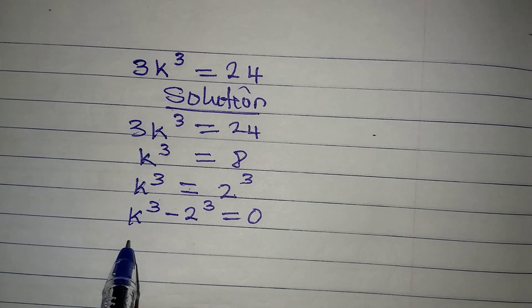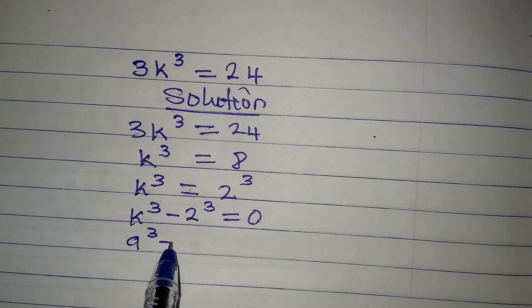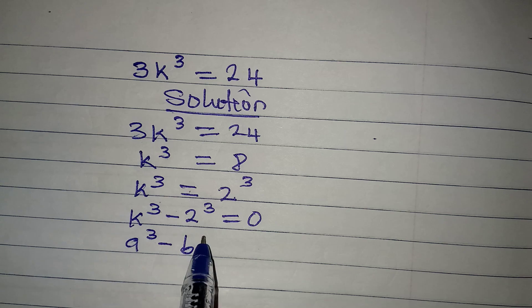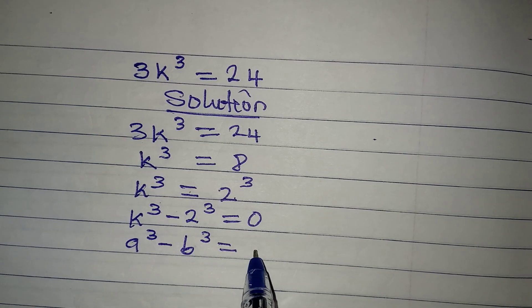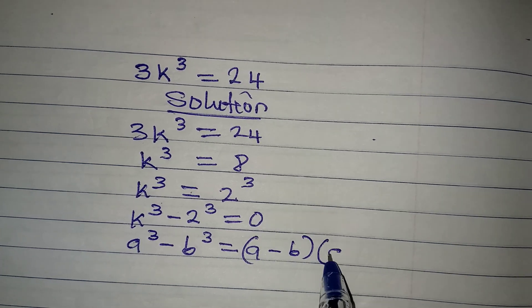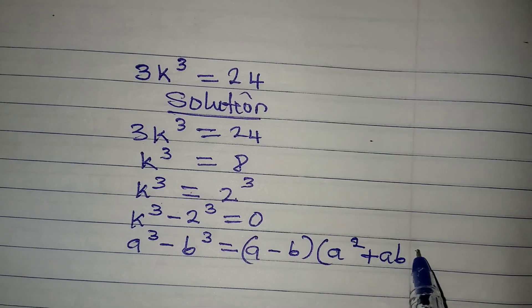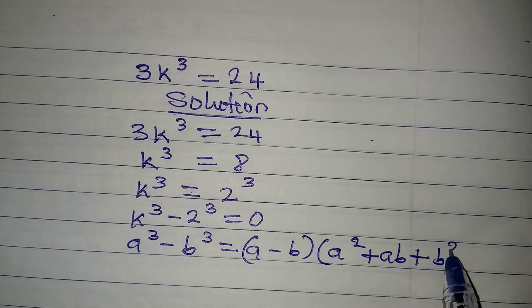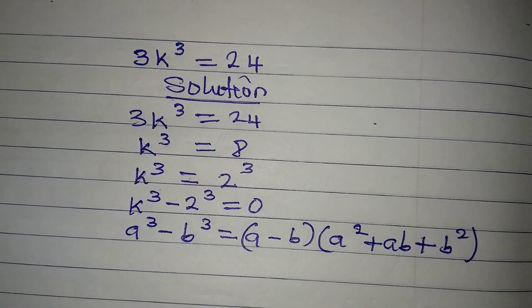Now apply a standard. If a³ - b³ is given, then it will be the same thing as (a - b)(a² + ab + b²). So this is what we are going to have.